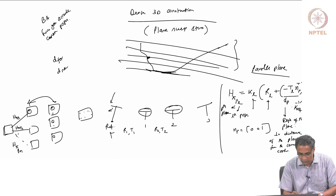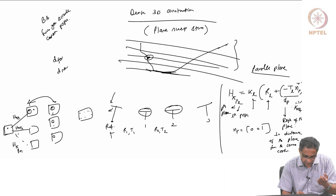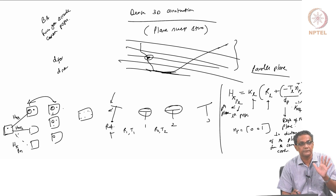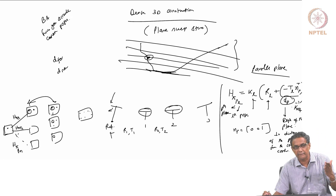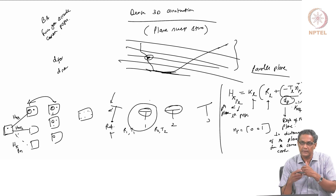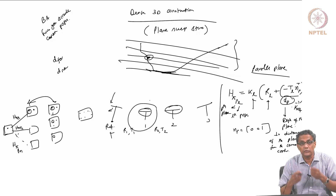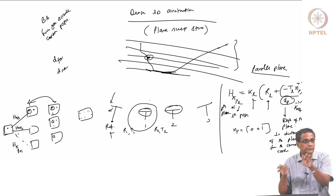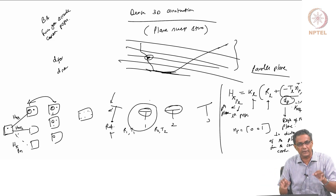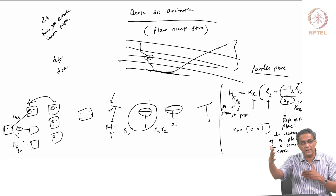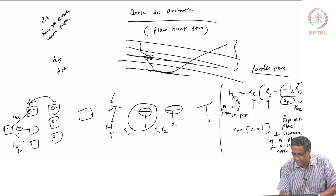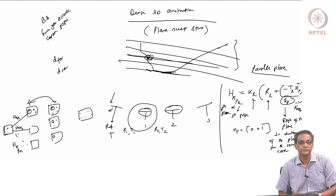This is called a winner-take-all strategy. For each pixel, wherever photo consistency holds across the views, you identify the correct depth. A point at a different depth will produce a mismatch when the wrong planar homography is applied, because d_p doesn't match. By sweeping all planes and checking consistency, you can assign a depth to every pixel — repeating across all planes to find where each point correctly falls.